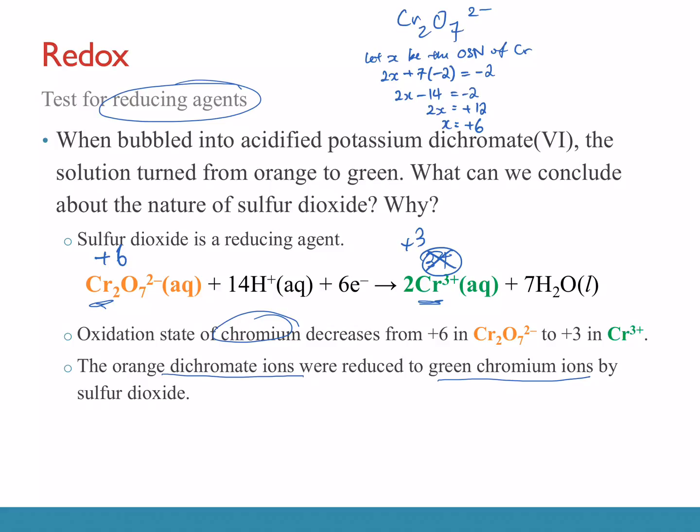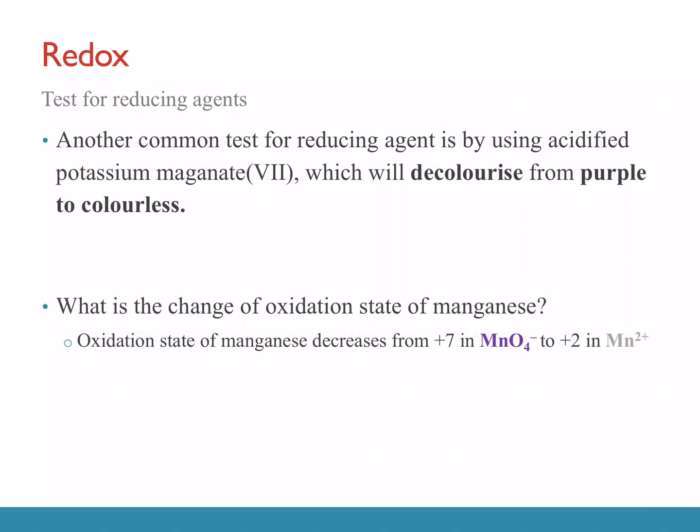When we see that a substance is a reducing agent, remember it itself must be oxidized. Another common test is using acidified potassium permanganate (KMnO₄), which we used in the lab — it decolorizes from purple to colorless. When you add it to a solution of iron(II) sulfate, the purple suddenly vanishes. Note: potassium permanganate is purple, and Mn²⁺ is colorless.